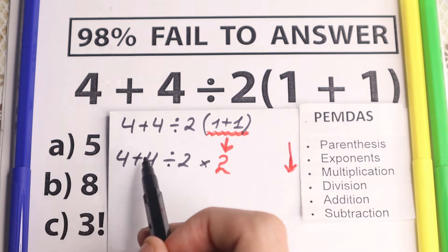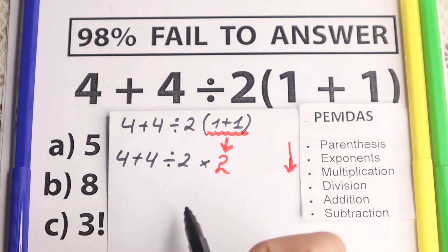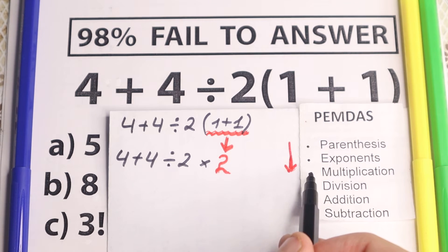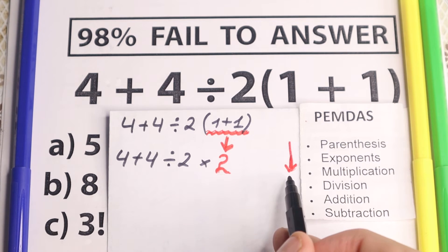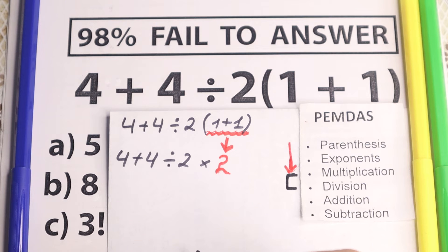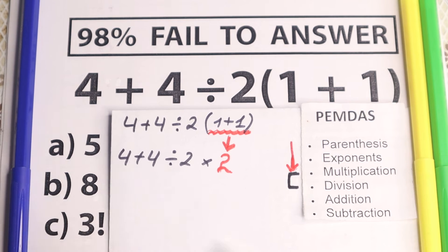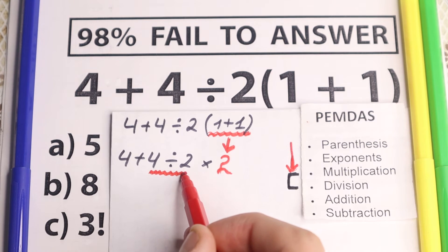The next step is exponents. Are there any exponents — squares, cubes? No, I don't see any of those, so we move to the next step. The next step is multiplication. A lot of students make a common mistake right here — they say, okay, multiplication, let's multiply 2 times 2. But the correct approach is to treat multiplication and division as one group and scan from left to right for division and multiplication together.